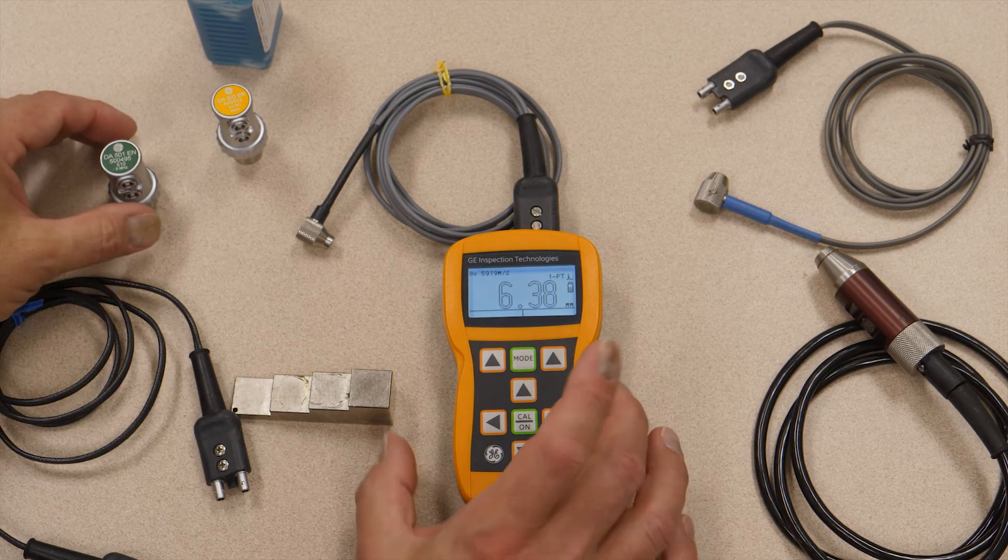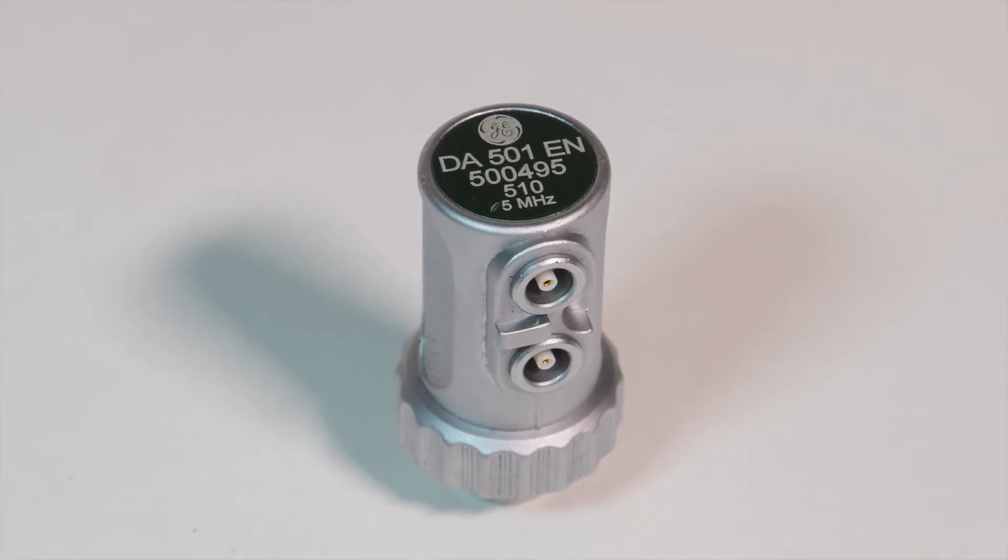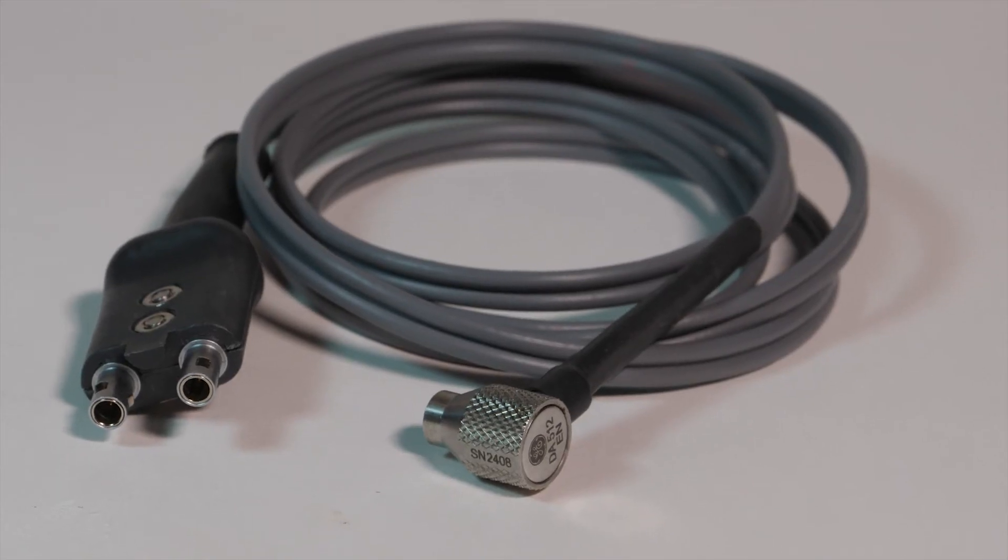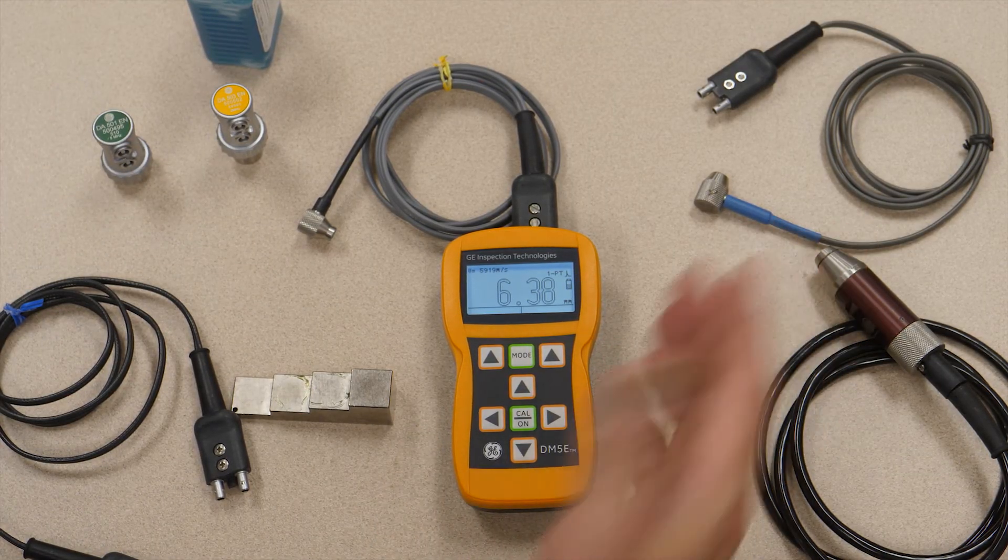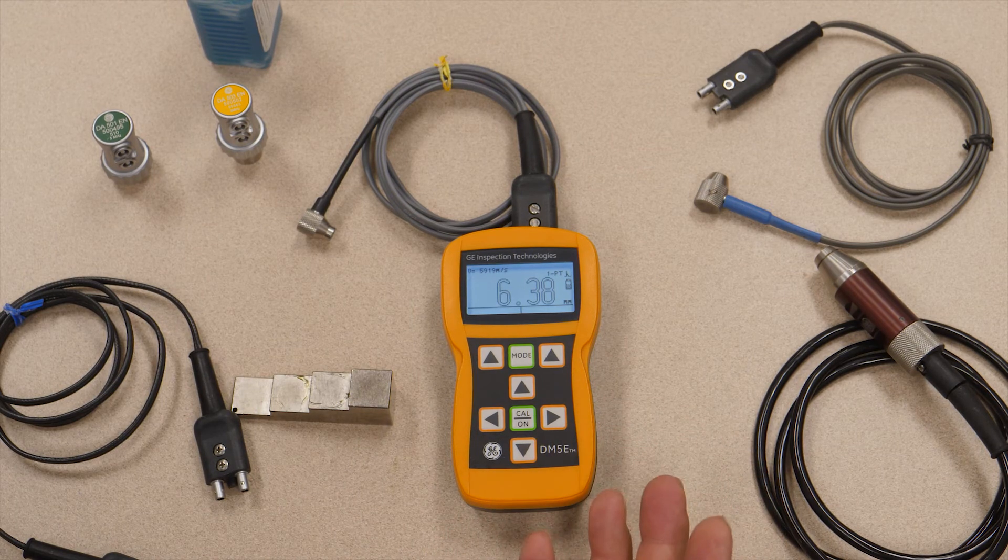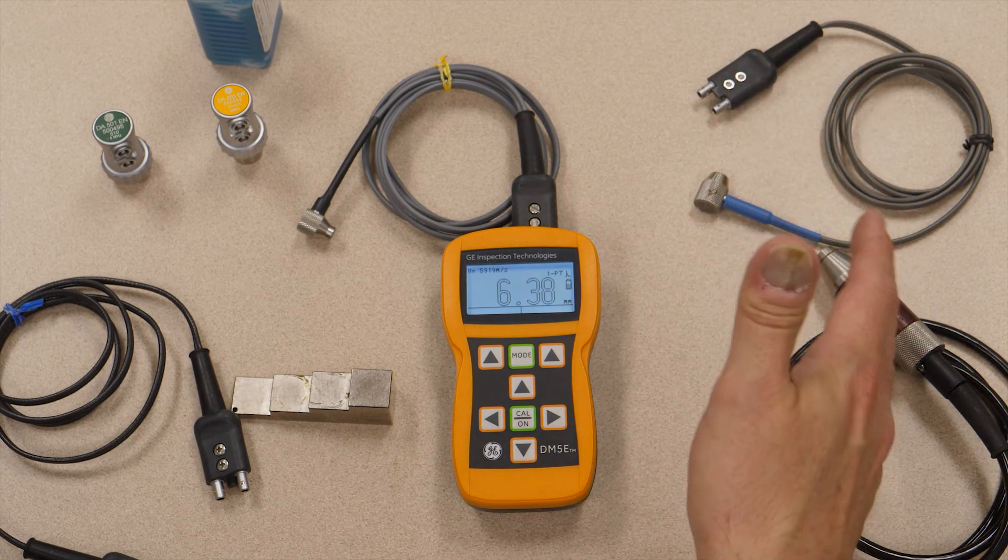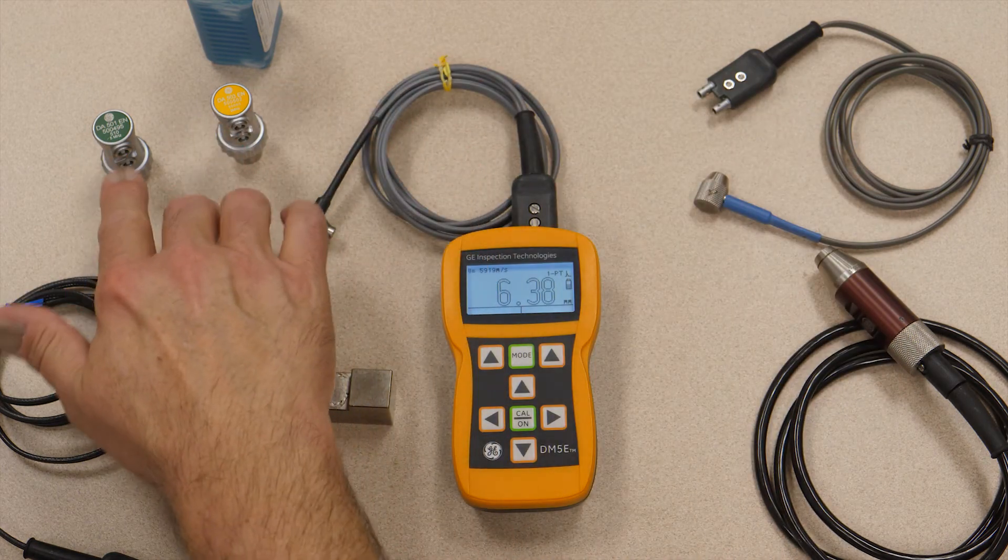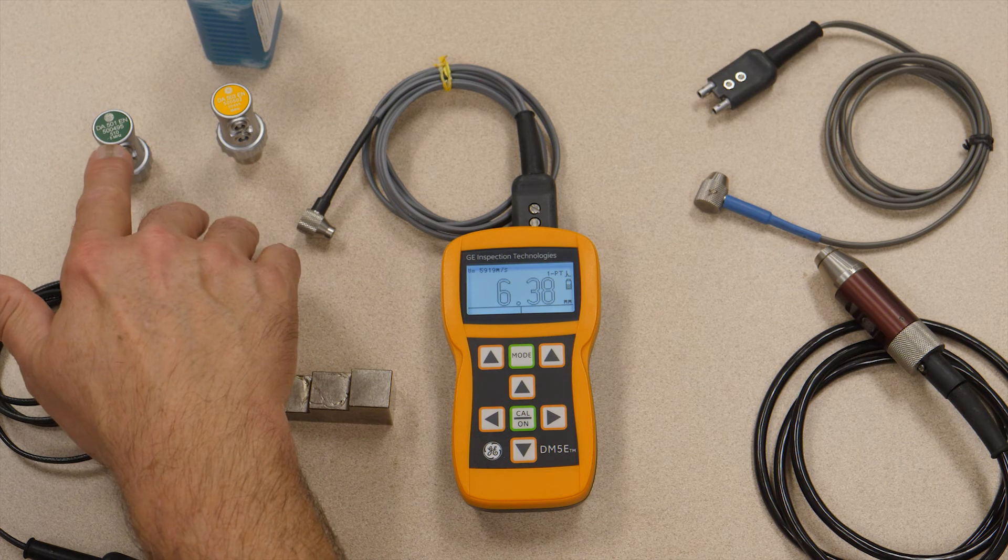Now, the dual multi-mode is only supported on this instrument with the DA501 probe and the DA512 probe. So a common question we have, folks will buy a DA503 or an FH2E, very commonly used probes, but only the regular dual mode is supported on these other probes. If you want dual multi to measure through thick coating, DA501 or DA512 takes care of your dual multi needs.